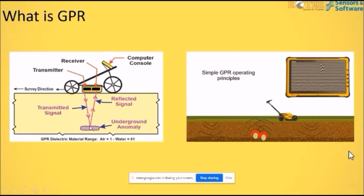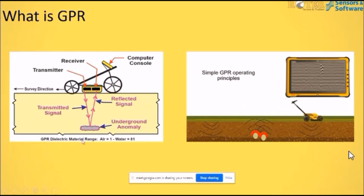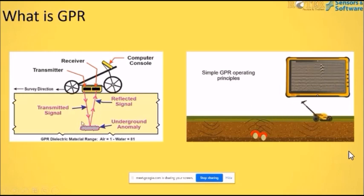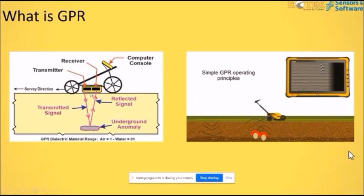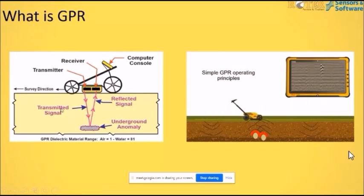As the names suggest, the transmitter transmits radio signals into the material. When there is some contrast in physical properties — since GPR works on the dielectric material range — the dielectric constant defines how much reflection we are going to get for a particular anomaly. These 1D traces model the variations of reflectivity in the investigation domain and define the response of any anomaly underneath.